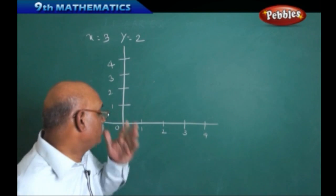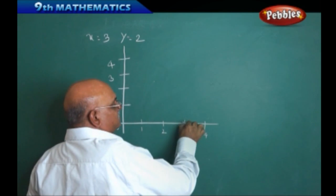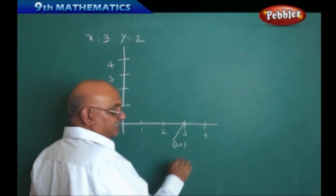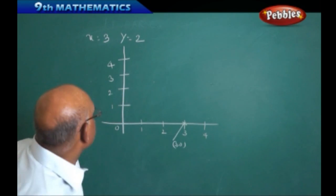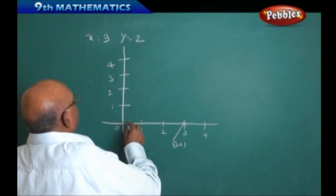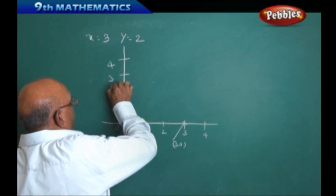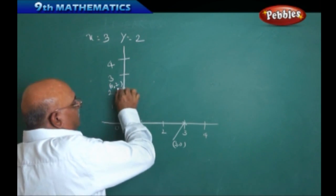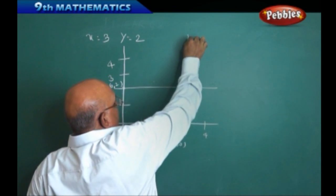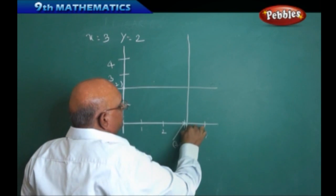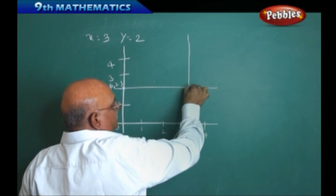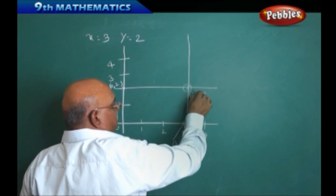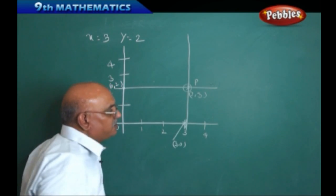x = 3 means if we take the point on the x-axis at 3, the coordinate is written as (3, 0). Similarly, on the y-axis we can write it as (0, 2). The lines drawn are horizontal and vertical, and the point of intersection of these two lines is (2, 3), which we can call point P.